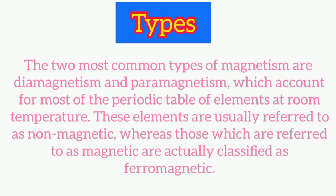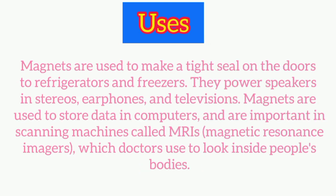At room temperature, these elements are usually referred to as non-magnetic, whereas those which are referred to as magnetic are actually classified as ferromagnetic. Now let's see its uses. Magnets are used to make a tight seal on the doors